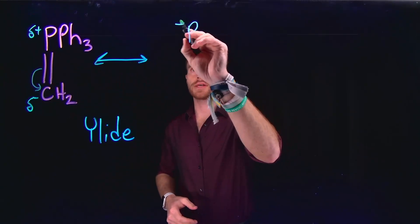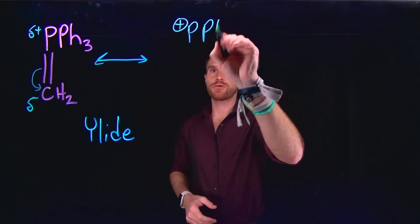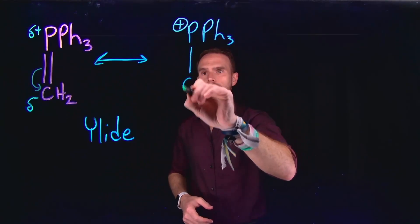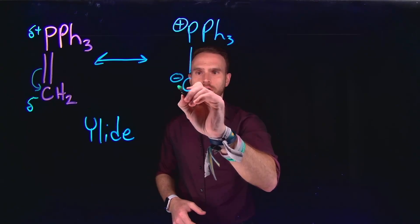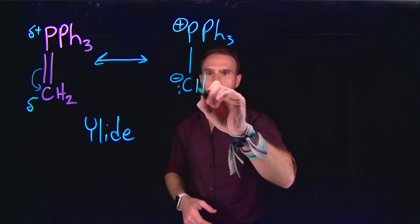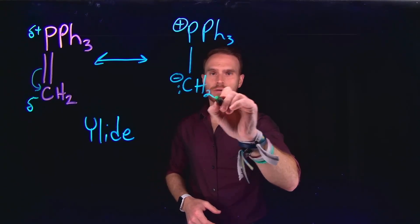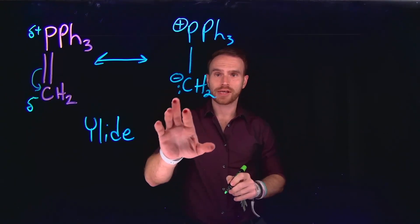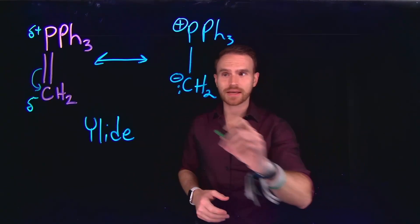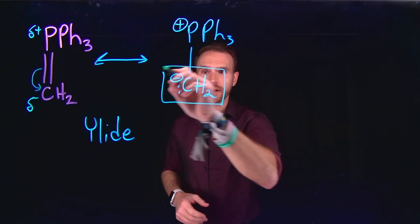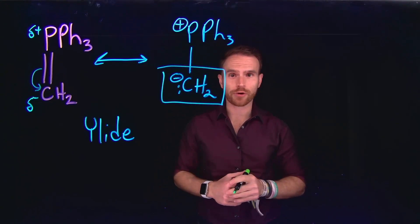So we can redraw this, where phosphorus now has a fully positive charge, and carbon, the phosphorus to carbon bond is now a single bond, and there is a negative charge on carbon with a lone pair. This gives us a reasonable resonance structure for this phosphorus ylide known as a Wittig reagent. Importantly, this means that we have generated a carbon nucleophile, which is pretty rare in organic chemistry.